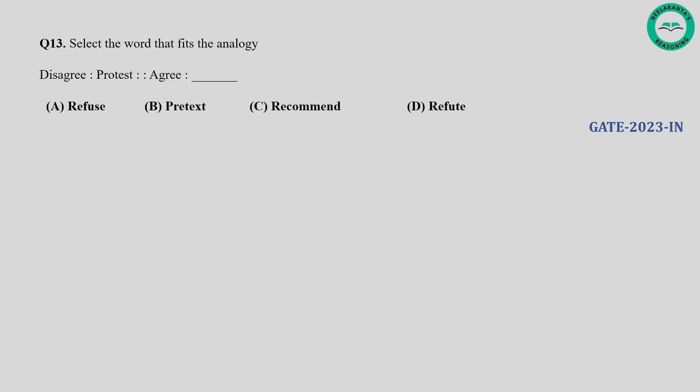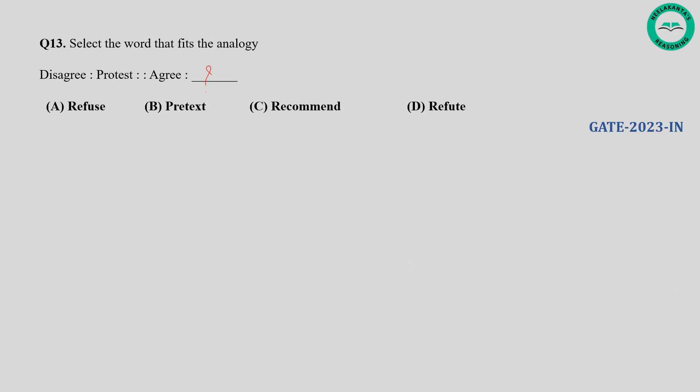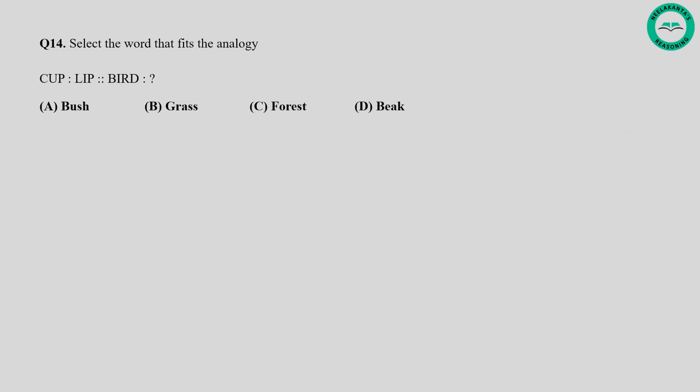Question number thirteen: Select the word that fits the analogy — Disagree, Protest, Agree, blank. The analogy disagree:protest suggests that when someone disagrees with something they may protest against it. Therefore, when someone agrees with something, the corresponding action would be to refute. So the answer D is correct.